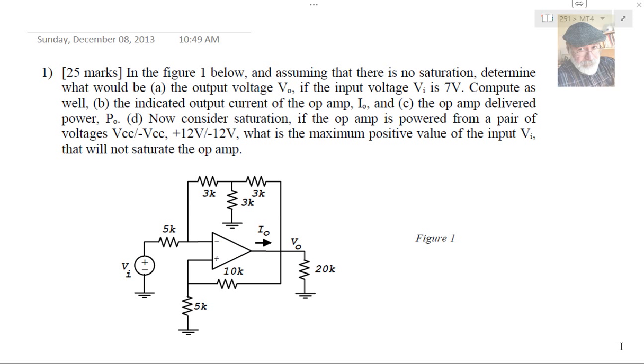D, now consider saturation. If the op-amp is powered by a pair of voltages Vcc, negative Vcc, plus 12 volts, negative 12 volts, what is the maximum possible positive value of the input VI that will not saturate the op-amp? Let's begin.